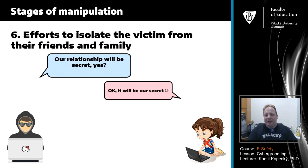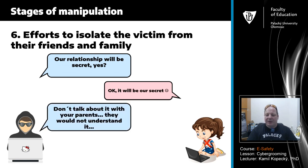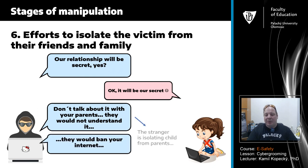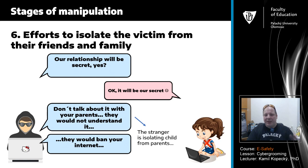Technique number six is forcing the victim to isolate from their friends or family. For example, the attacker writes: 'Our relationship will be secret. Yes, it will be our secret. Don't talk about it with your parents — they would not understand it, they would ban your internet.' The stranger isolates the child from parents by suggesting that if the child talks about their conversation, the result will be a ban of internet or social networks and other potentially bad reactions from parents. So it's a kind of psychological isolation — keeping all conversations secret.